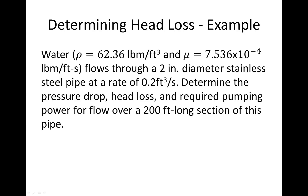This video provides an example of how we can use the principles discussed in class to determine the head loss across a pipe. In this example, water is flowing through a 2-inch diameter stainless steel pipe at a rate of 0.2 cubic feet per second. Based on this volumetric flow rate, we are asked to determine the pressure drop, the head loss, and the pumping requirements for this flow over a 200-foot-long section of pipe. We recognize this as a problem of the first kind.